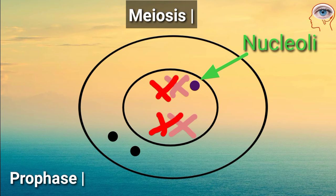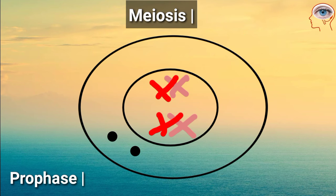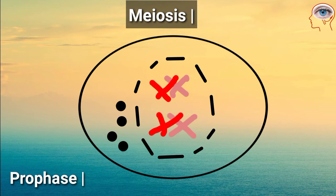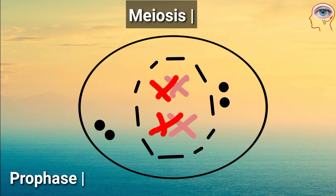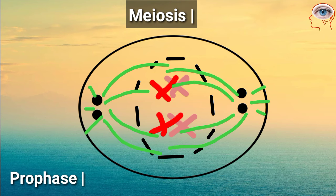Nucleoli disappear, the nuclear envelope breaks, and the centrosome migrates to the poles and forms the spindle fibers.